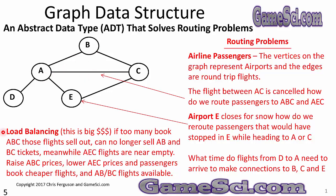Load balancing is big, big, big money. If too many book flights from A to B to C and those flights sell out, we can no longer sell direct flights on that route. We want to encourage passengers to book different routes — raise the price from A to B to C and lower it from A to E to C so more people book the less congested route, keeping the original route available.